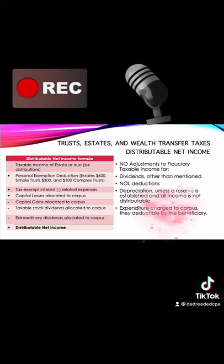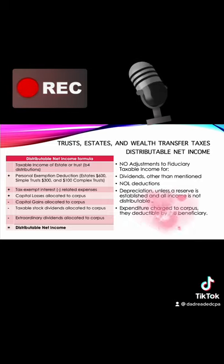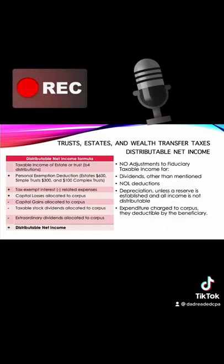Then you have tax-exempt income, which increases the taxable income minus the related expenses. Capital losses related to the principal and capital gains related to the corpus are reductions to the taxable income. Taxable stock dividends are also reductions to the taxable income, and finally extraordinary dividends related to the principal inside of the trust or estate.